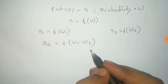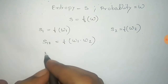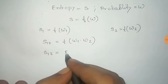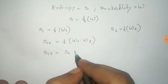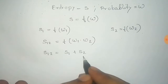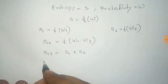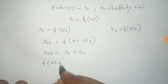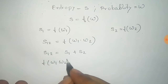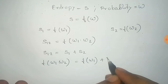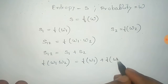Entropy S12 equals S1 plus S2 because entropy is additive. Now if we put these values in, we get f(Omega1 · Omega2) equals f(Omega1) plus f(Omega2).